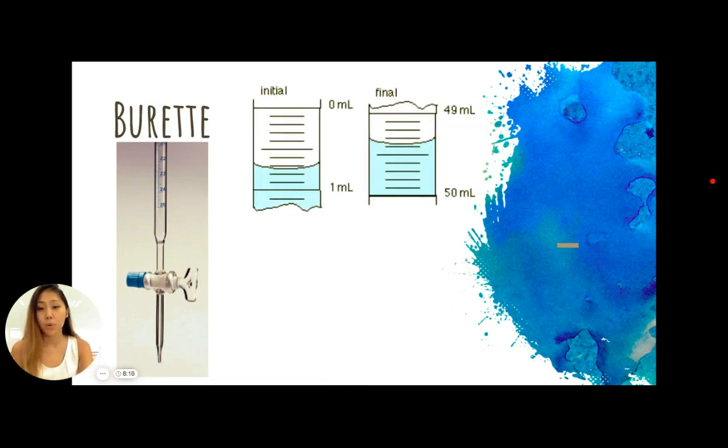Say we have a burette, the initial measurement is this much and the final is this much. This is telling us that we need to somehow be able to calculate a way of measuring how much liquid we actually dripped out of that knob. This difference is going to tell us the volume of liquid that's been dripped out and we need to calculate that.